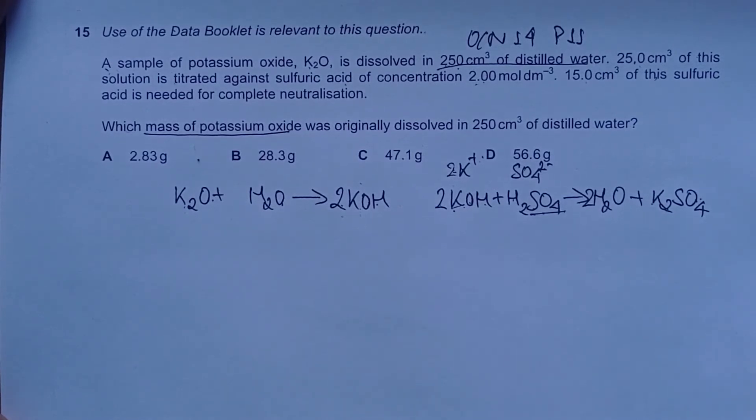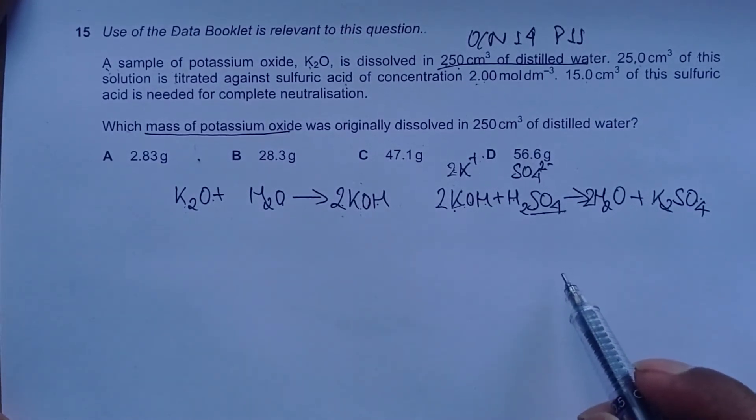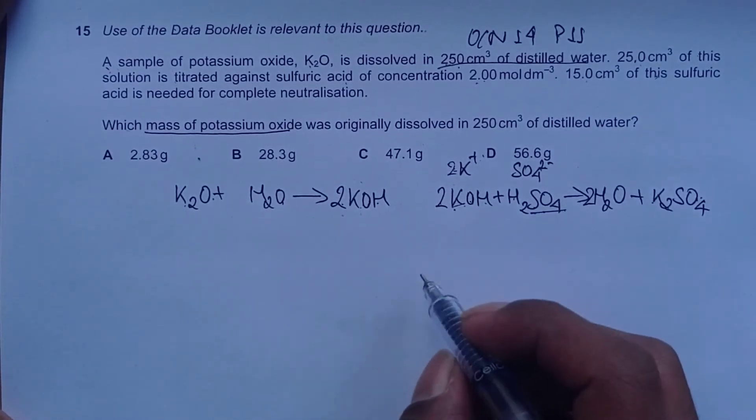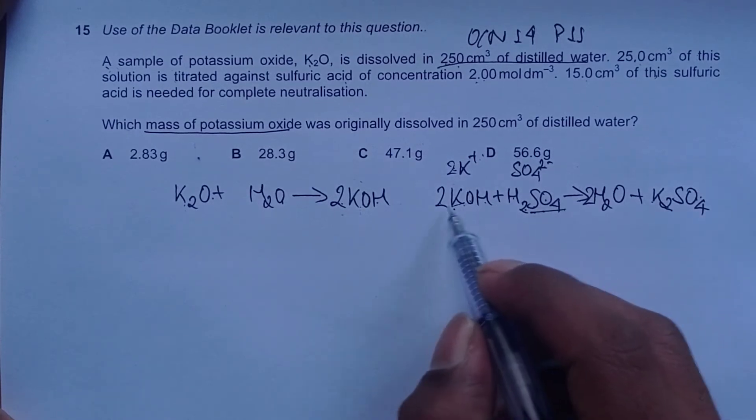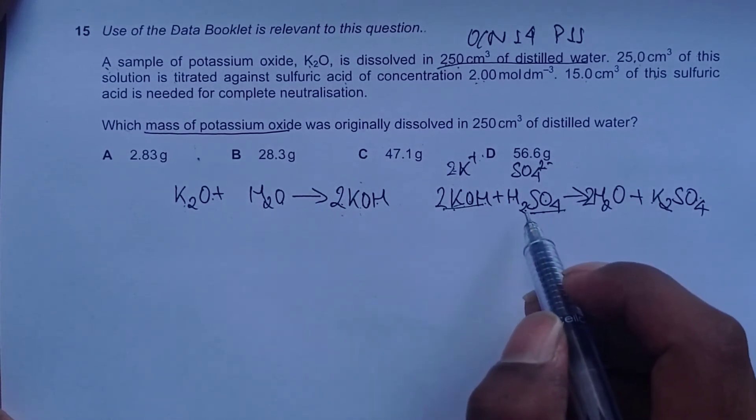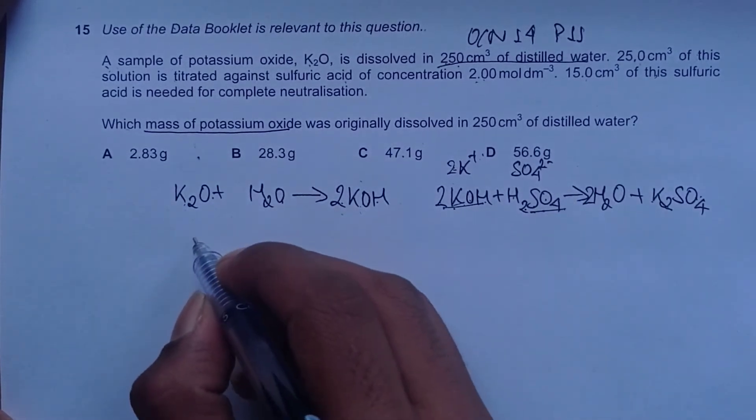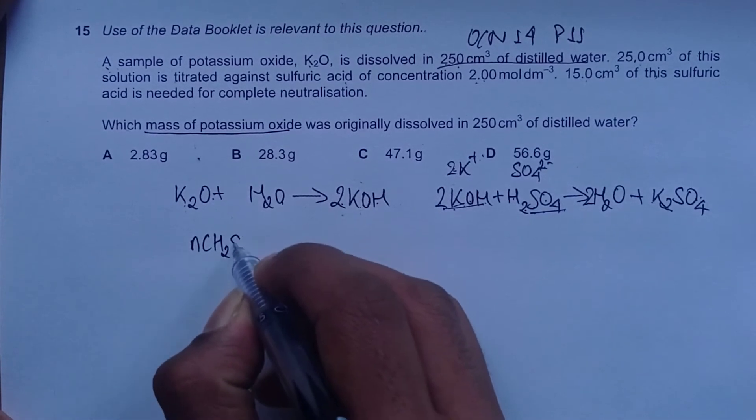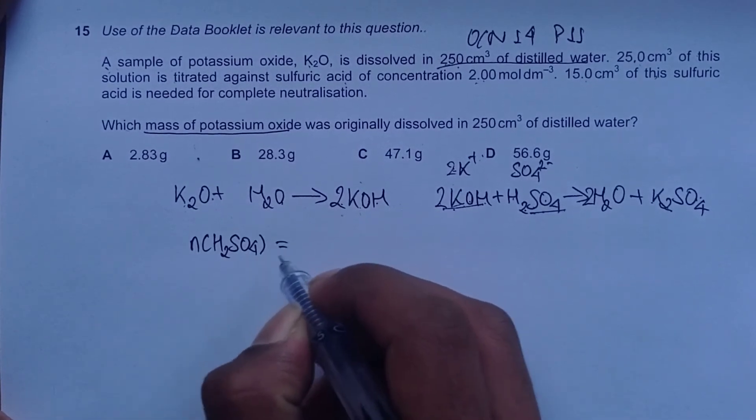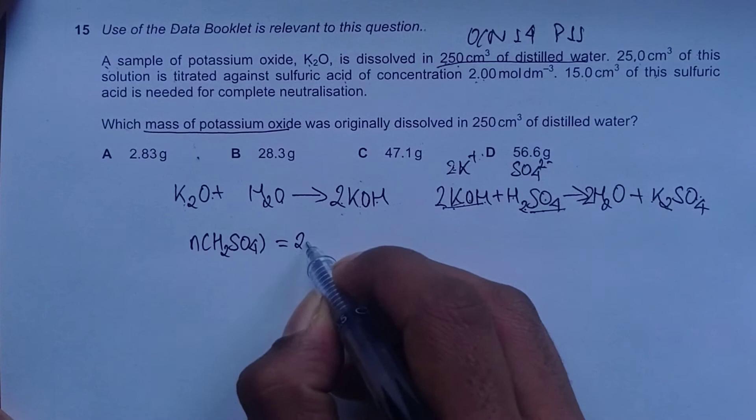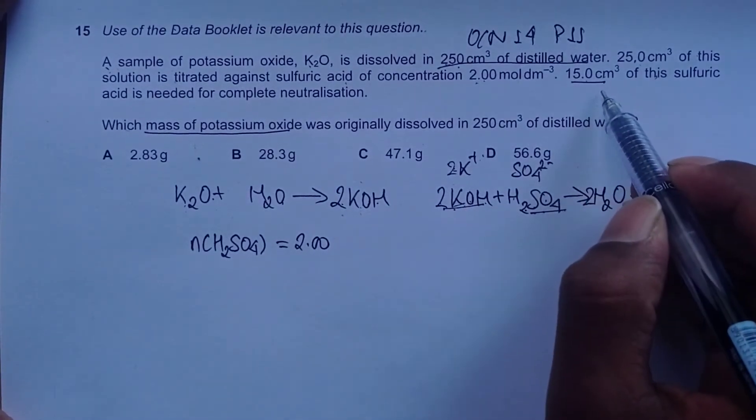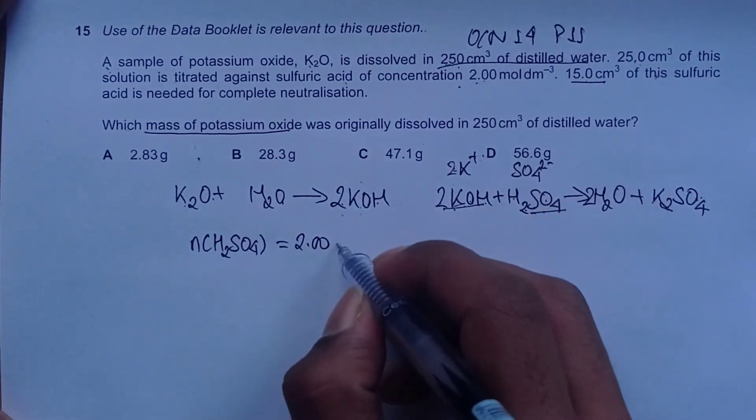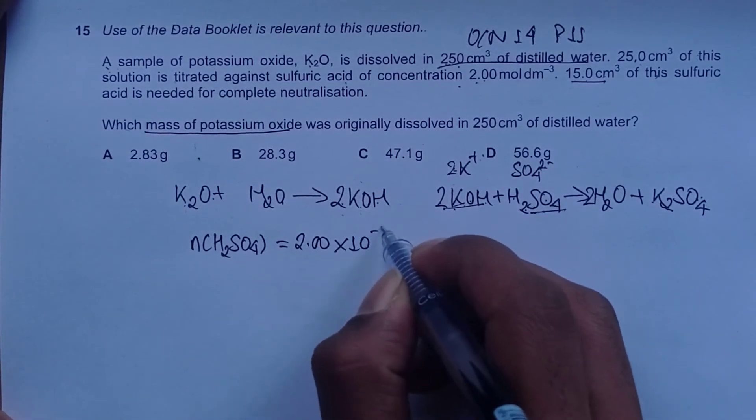Next, calculate how many moles of sulfuric acid were used, because knowing moles of sulfuric acid lets us figure out moles of potassium hydroxide using mole ratios. Moles of sulfuric acid is concentration multiplied by volume: 2 mole per dm³, and volume in cm³ converts to 2 × 10⁻³ times 15.0.